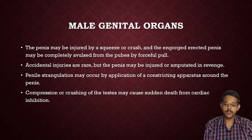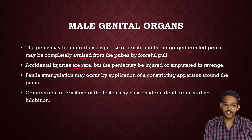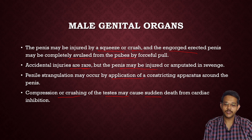The penis may be injured by a squeeze or crush, and the engorged erect penis may get completely avulsed by a forceful pull. Accidental injuries are very rare, but the penis may be injured or amputated in cases of revenge. Penile strangulation may occur by application of a constricting apparatus around the penis. Compression or crushing of the testicles may cause sudden death from cardiac inhibition, since the testicles are innervated by the vagus nerve and crushing may cause reflex cardiac inhibition leading to stoppage of the heart.